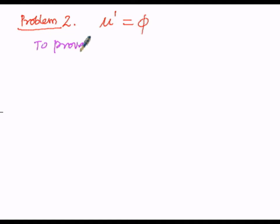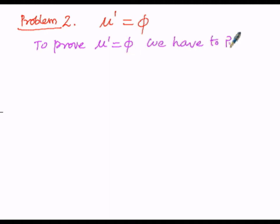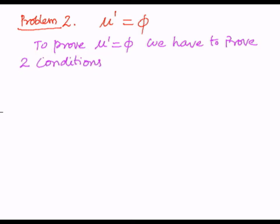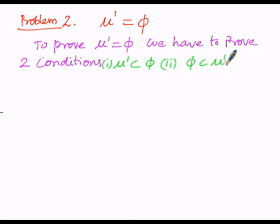We have to prove μ dash equals φ, and for that we have to prove two conditions. The first is that μ dash must be the subset of the empty set φ, and the second condition is that φ must be the subset of the complement of the universal set, that is μ dash.